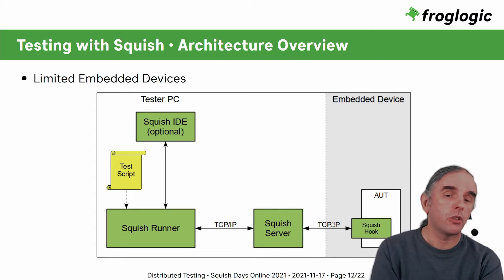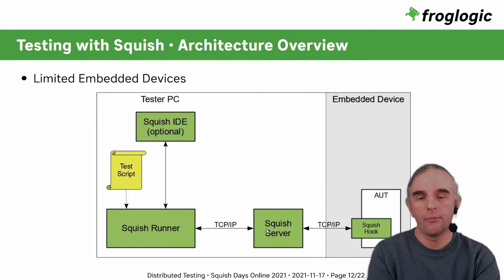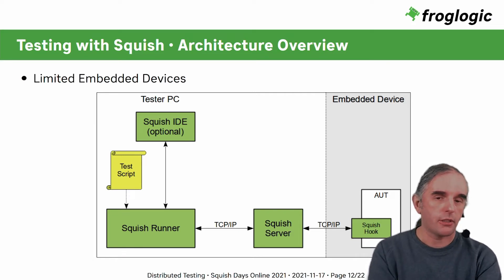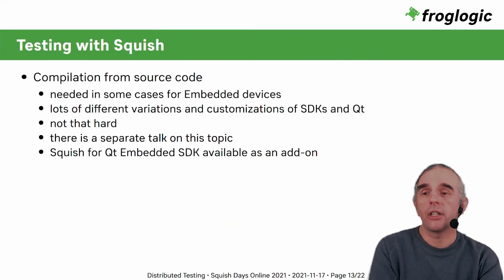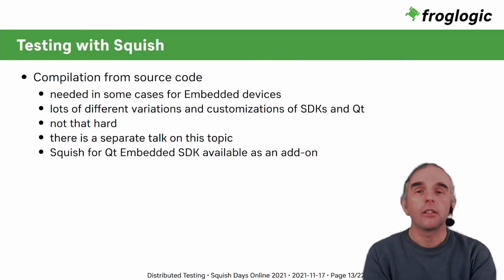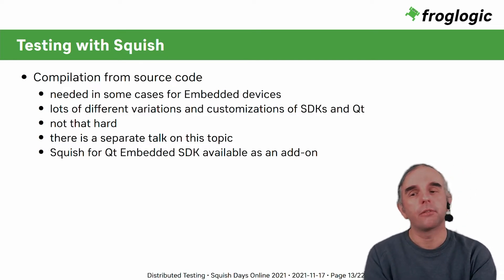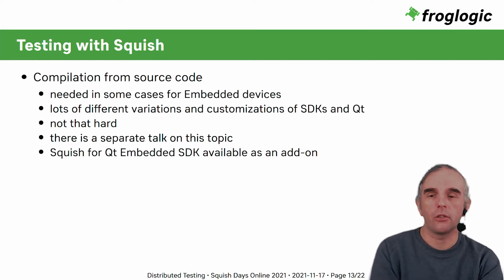In some very limited cases where Squish cannot start additional processes on embedded devices, you have to compile your application with a small part of Squish inside it — the Squish Hook becomes part of the application. The rest of the communication mechanism is the same; Squish communicates through TCP/IP channels. In this rare case it might be necessary to compile Squish from sources, which isn't that hard. There will be a separate talk on that topic during these Squish days.